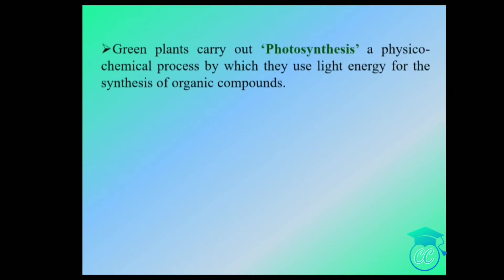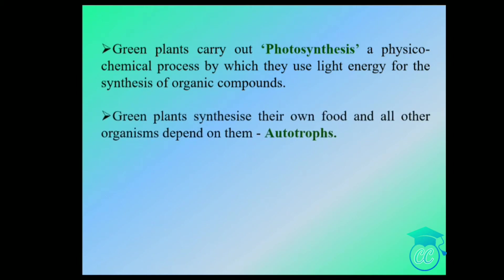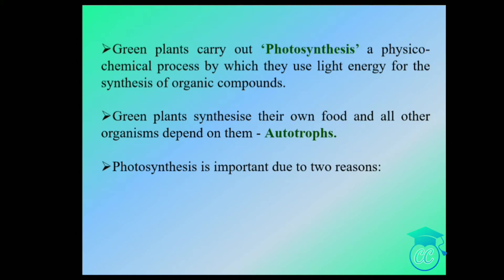What is photosynthesis? In green plants, they carry out photosynthesis — it is a physicochemical process by which they use light energy for the synthesis of organic compounds. The green plants synthesize their own food and all other organisms depend on them, so green plants are called autotrophs.